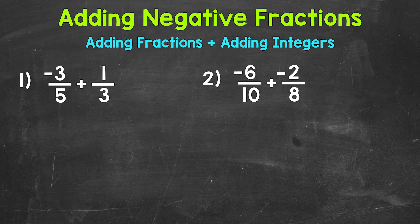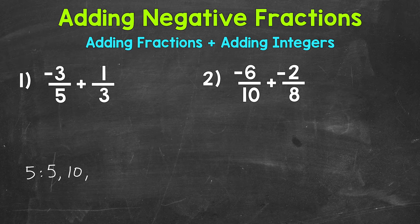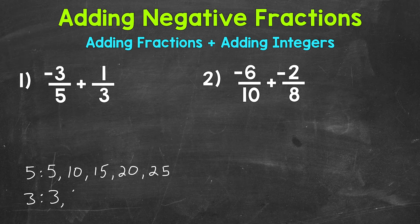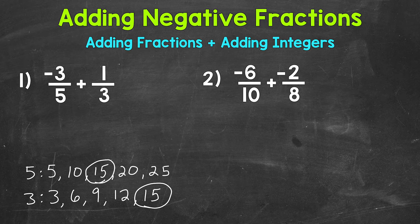You may be able to figure out the least common multiple between our denominators without writing out the multiples, but I'm going to write them out for a quick refresher. The first five multiples of five: 5, 10, 15, 20, 25. The first five multiples of three: 3, 6, 9, 12, 15. So 15 is the least common multiple — the smallest value they share — and that's our common denominator.